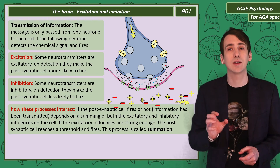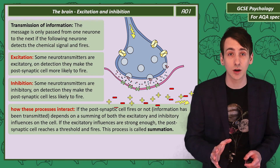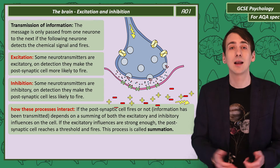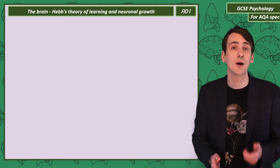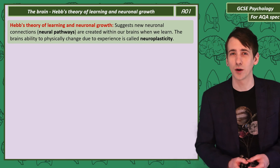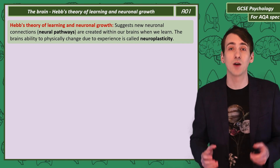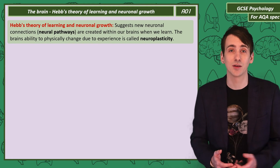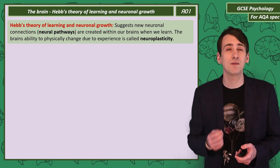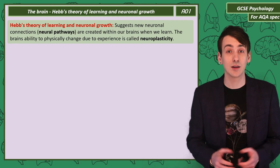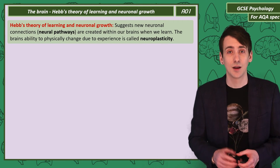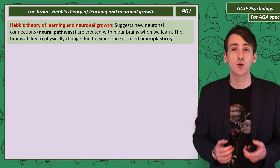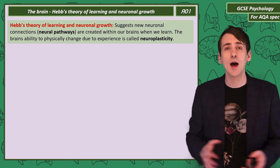Only if the excitatory influences are strong enough will the postsynaptic cell reach a threshold and then fire. Let's finish our discussion on the neuron by considering Hebb's theory of learning and neural growth. Your brain is constructed of many neuronal pathways — these are connections between groups of neurons. Hebb suggests that when we learn, our brain physically changes, creating new neural pathways. The term we give for our brain physically changing in response to experience is neural plasticity.